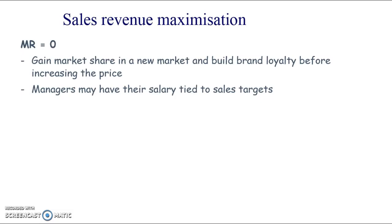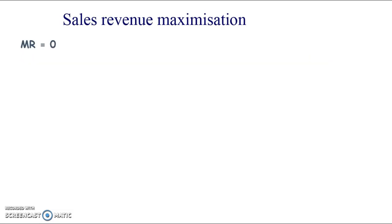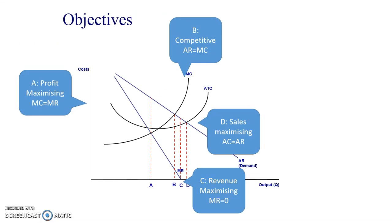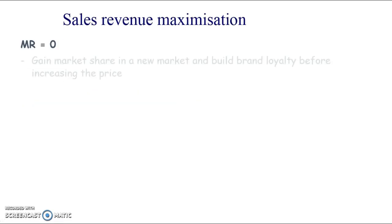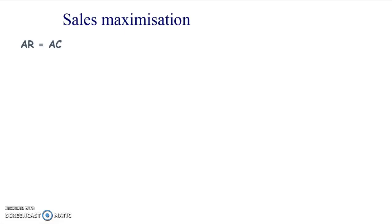Managers may have their salary tied to sales targets, which leads to what we call satisficing — aiming for multiple targets and not quite hitting all of them, but landing somewhere in between. Looking at the diagram: owners want profit maximization at point A, but the manager in control may have their bonus tied to sales revenue, pushing output toward point C. Some middle point may result — that's satisficing.